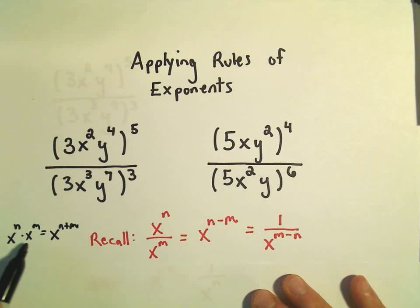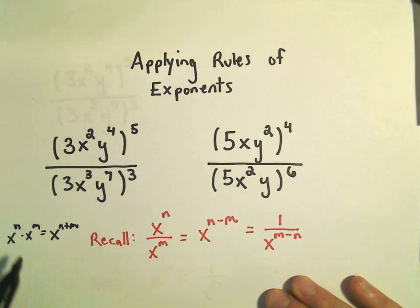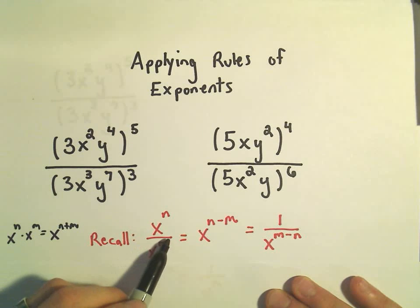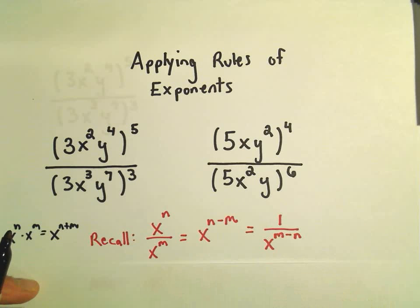But now instead of multiplying, we have division. Well, multiplication says add the exponents. Division ends up corresponding to subtracting the exponents.